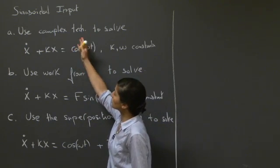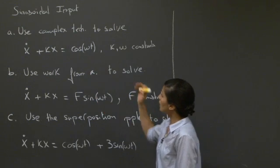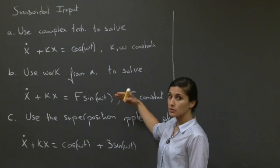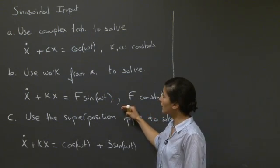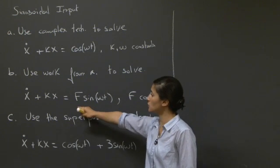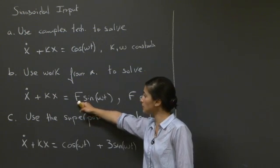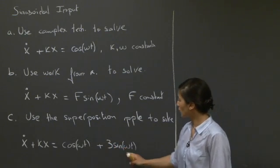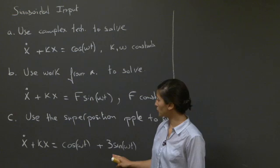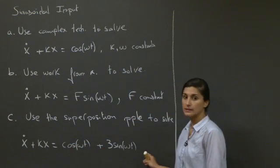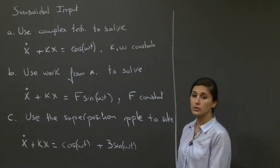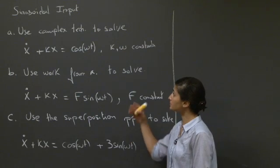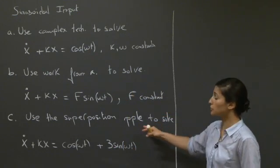In question A, you're asked to use complex techniques to solve this. In question B, we use what we had in A to solve a modified function, where we have a sinusoidal input on the right-hand side with an additional constant amplitude f. In part C, we use the superposition principle to solve the combined equation, where f equals 3. The right-hand side is a sinusoidal input as a linear combination of sinusoidal functions. All these equations are linear with constant coefficients, so the superposition principle holds.